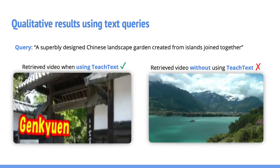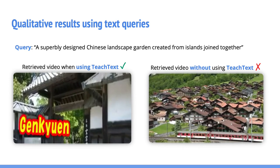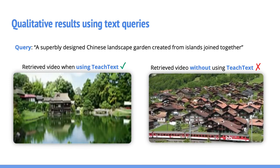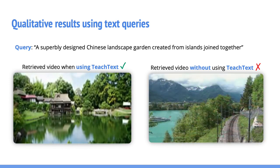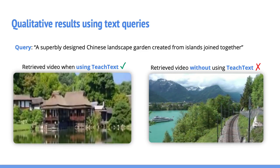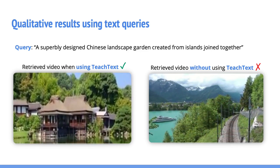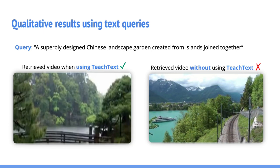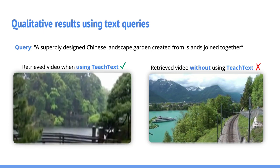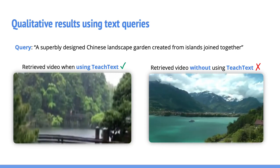Now, some qualitative examples. You can see the results with and without using our TeachText method. As it can be seen, without using TeachText, the model retrieves an incorrect video. By using TeachText, we manage to correct this error by leveraging the additional information brought by the teacher.